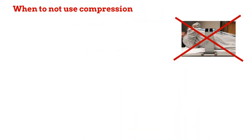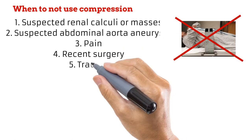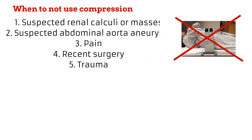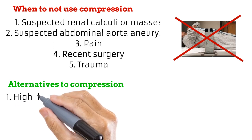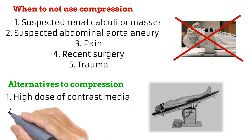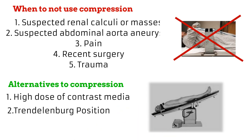Compression is inconvenient and not used by many departments. Even where it is used, there are situations in which it must not be applied — these include cases of suspected renal stones or masses, as compression can produce effects similar to a mass and cause a wrong diagnosis. It is also not used in patients with suspected aneurysm of the abdominal aorta, as compression can cause the aorta to rupture, leading to death. It worsens abdominal pain and is not advised after recent surgery or trauma to the abdomen. Useful alternatives include using a higher dose of contrast media and placing the patient in the Trendelenburg position, both of which promote distension of the renal pelvis and calyces.